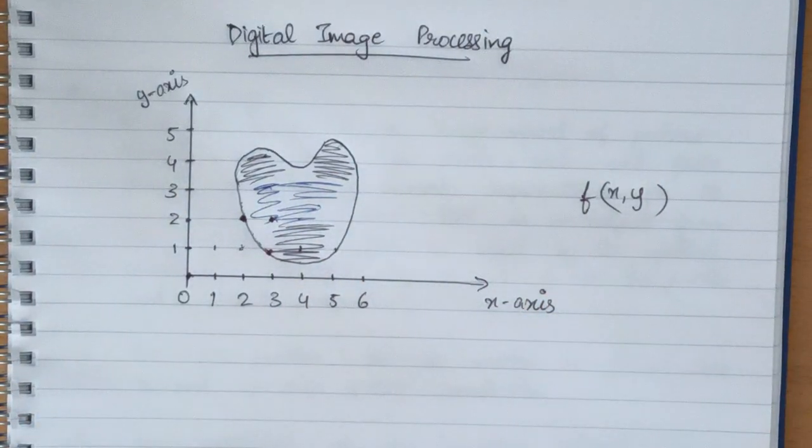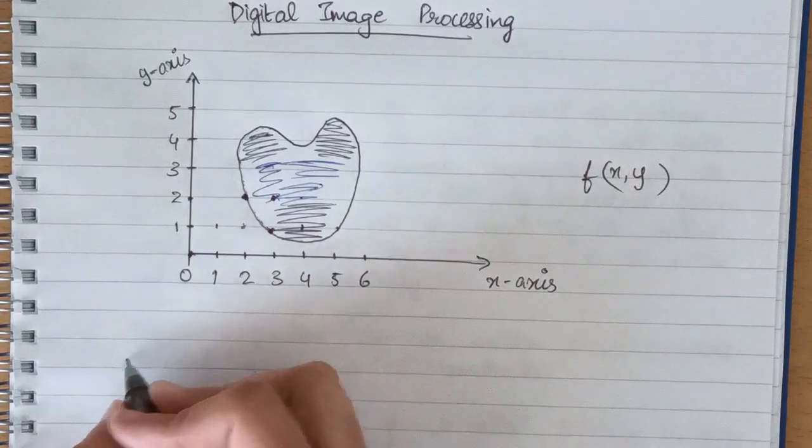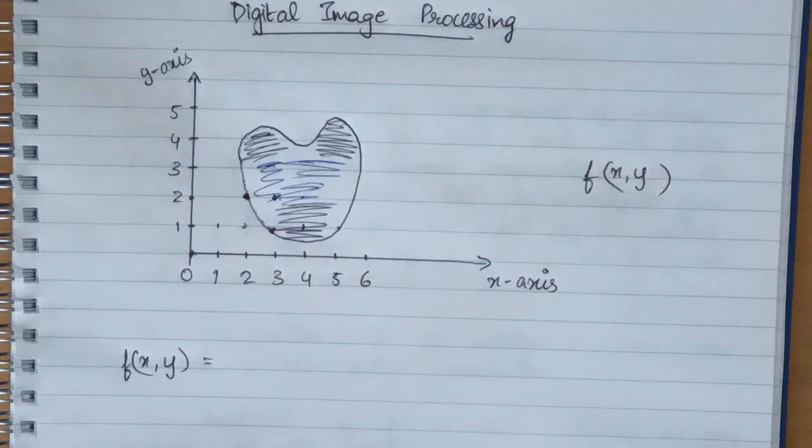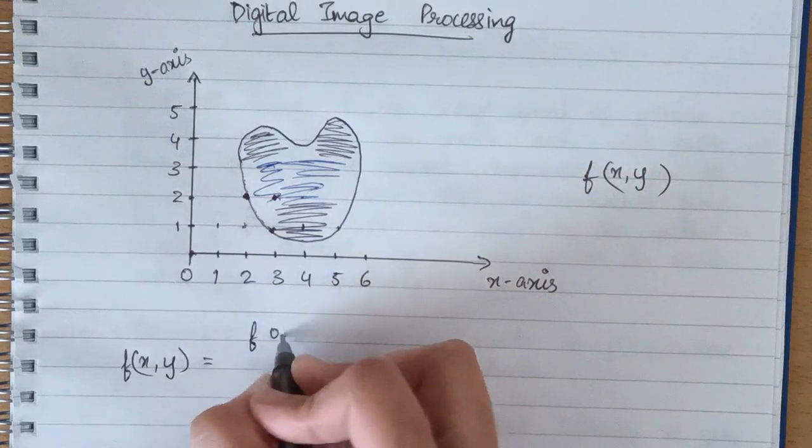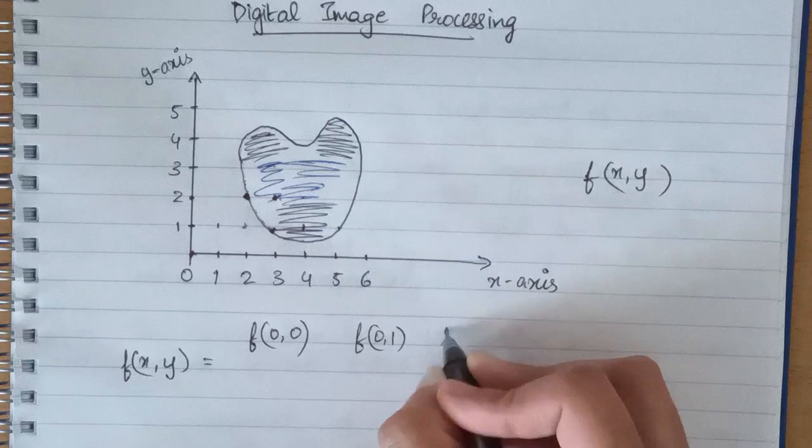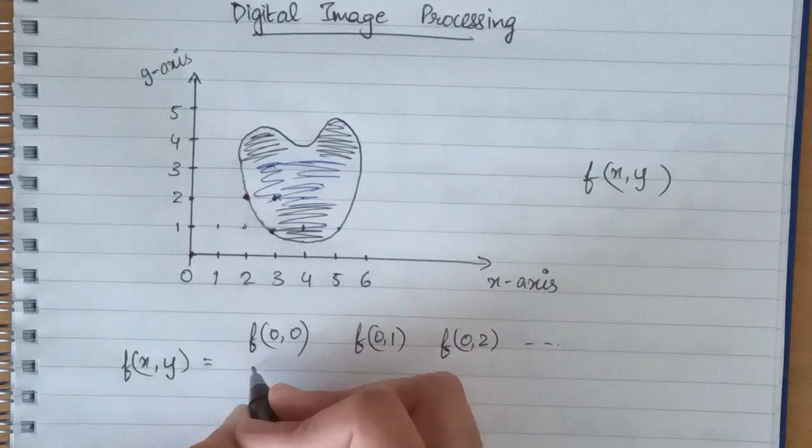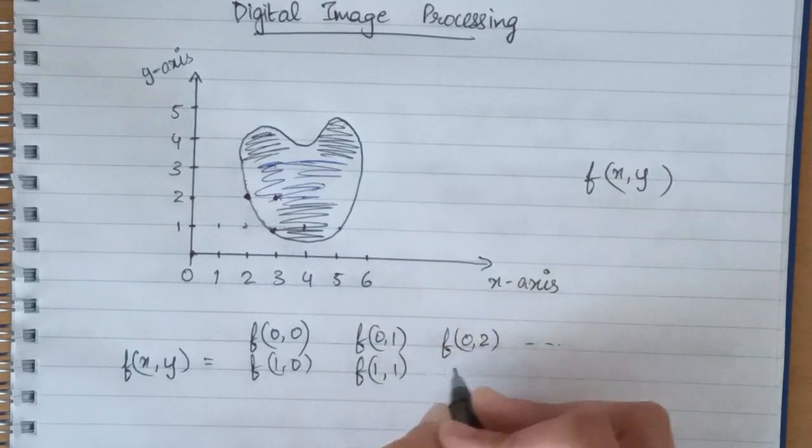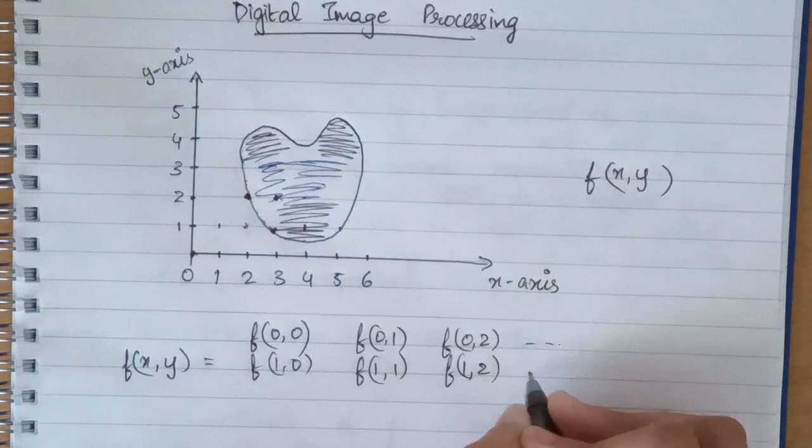If we want to represent this image, then it can be done with the help of a matrix. So suppose we write f of x comma y is equal to f of 0,0, 0,1, 0,2 and so on, f of 1,0, 1,1, 1,2 and so on.